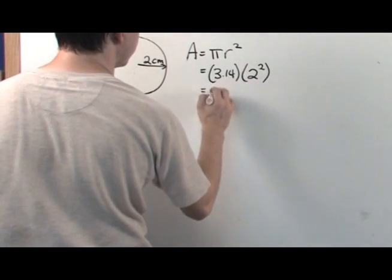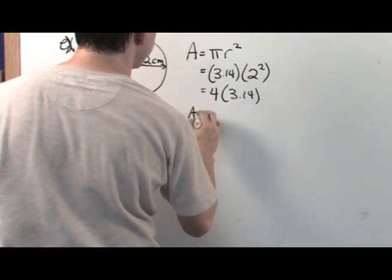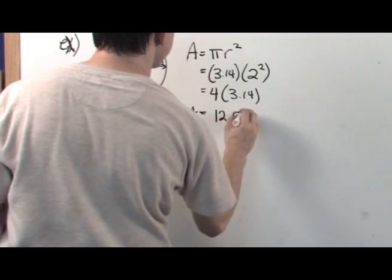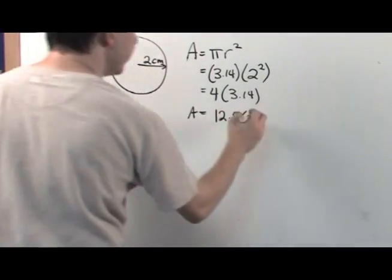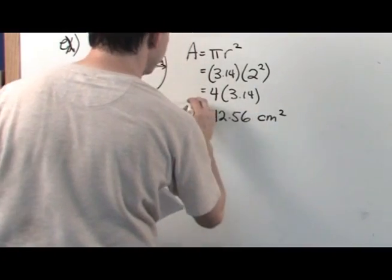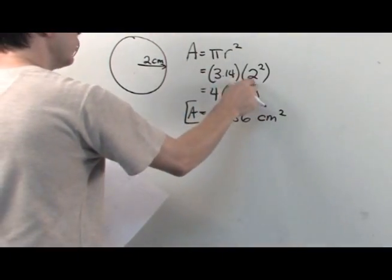2 times 2 is 4. 4 times 3.14. So the area is equal to 4 times 3.14 is 12.56, and I'm dealing with centimeters. And I'm dealing with area, so it's centimeters squared, because units of area always have square terms. So pi r squared.